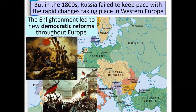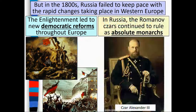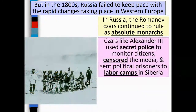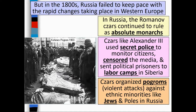The Enlightenment led to new democratic reforms throughout Europe. In Russia, the Romanov Tsars continued to rule as absolute monarchs. Tsars like Alexander III used secret police to monitor citizens, censored the media, and sent political prisoners to labor camps in Siberia. Tsars also organized pogroms, or violent attacks, against ethnic minorities like Jews and Poles in Russia.